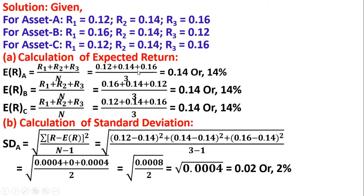From the calculations, the expected return for asset A is 10%. Similarly, the expected return for asset B is 14%, and the expected return for asset C is also 14%. For the standard deviation calculation, the formula is: summation of (R minus E(R)) squared, divided by n minus 1.